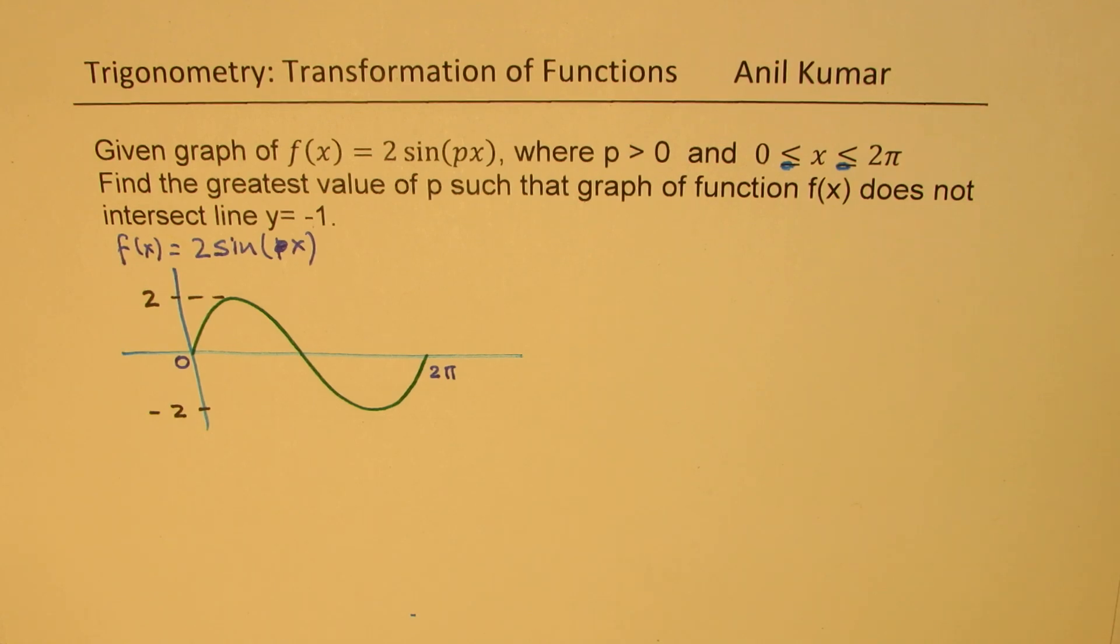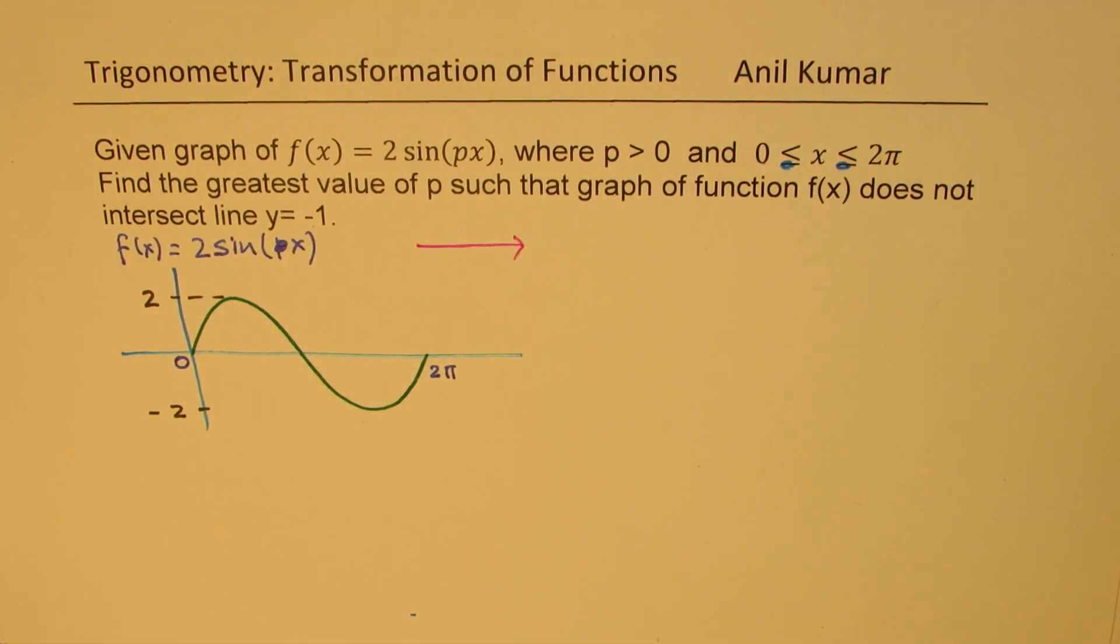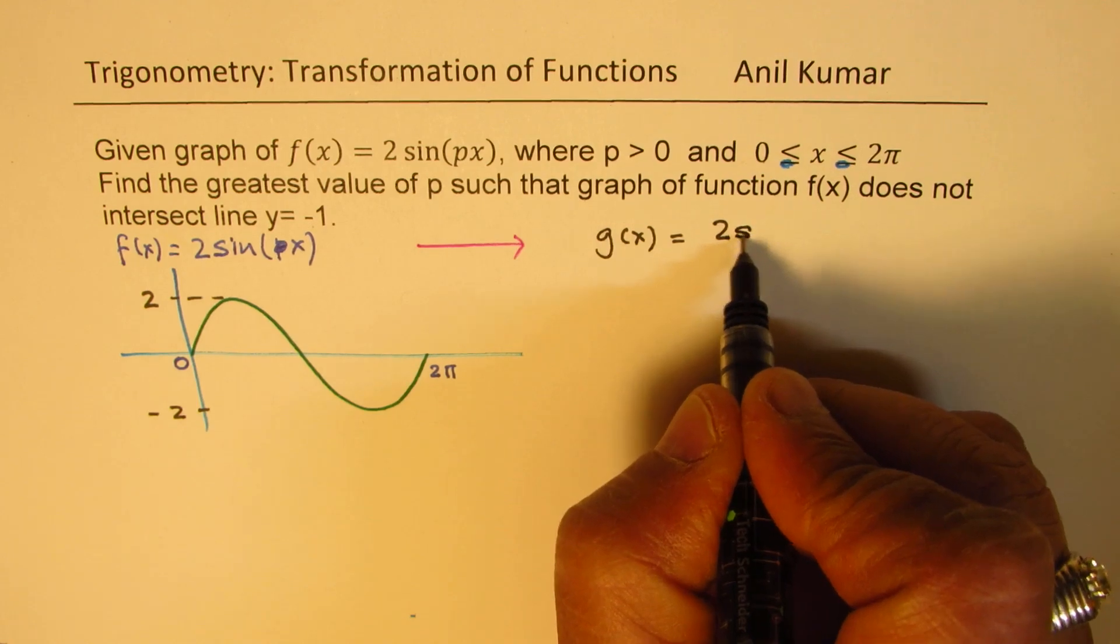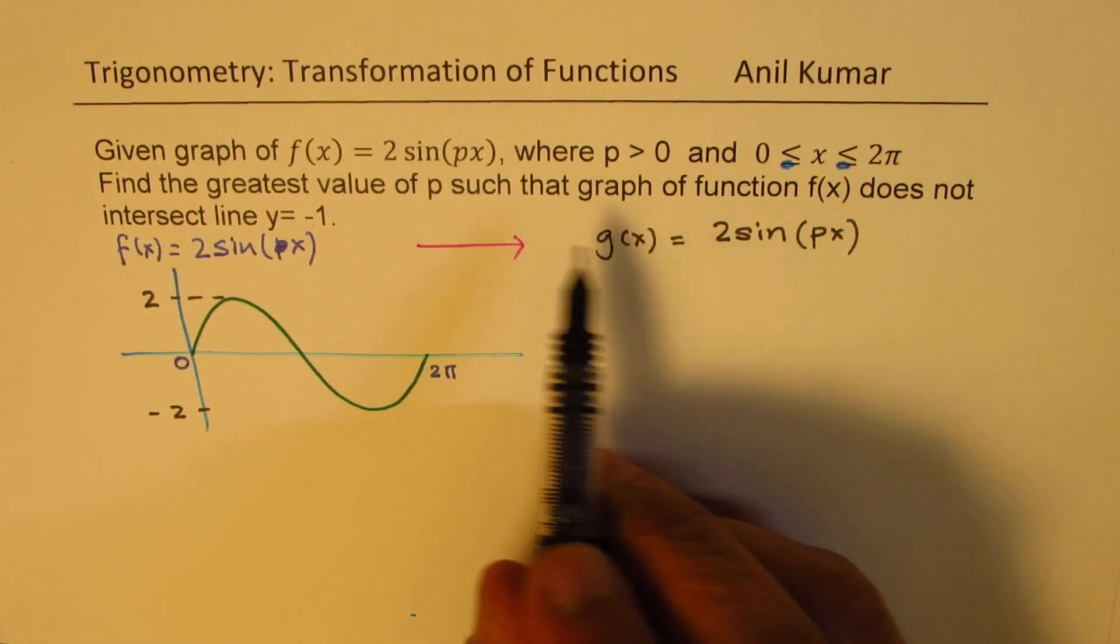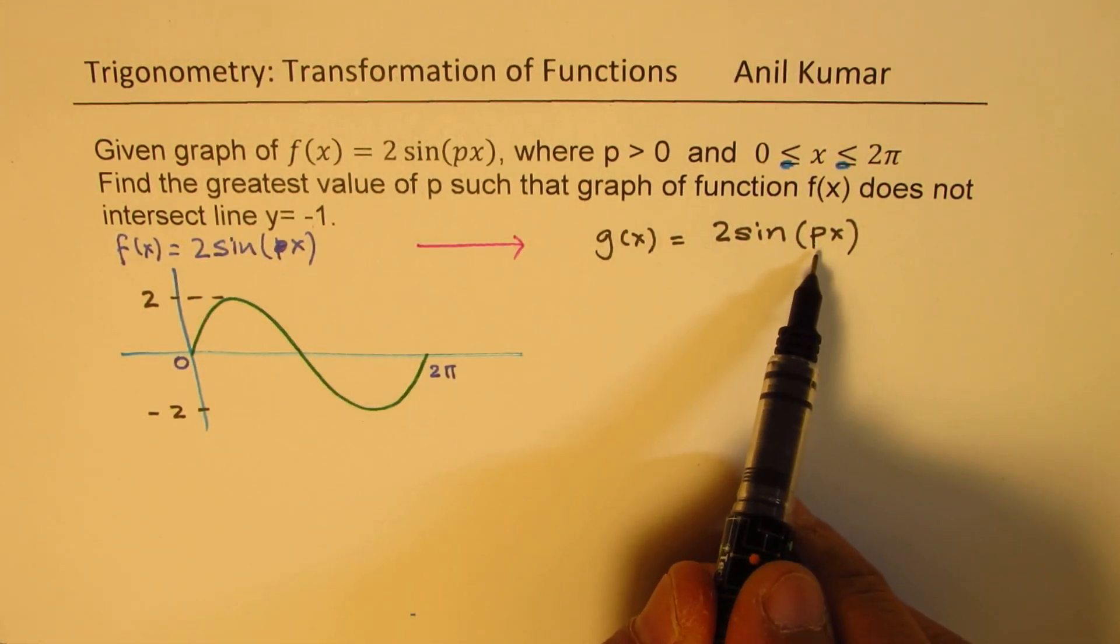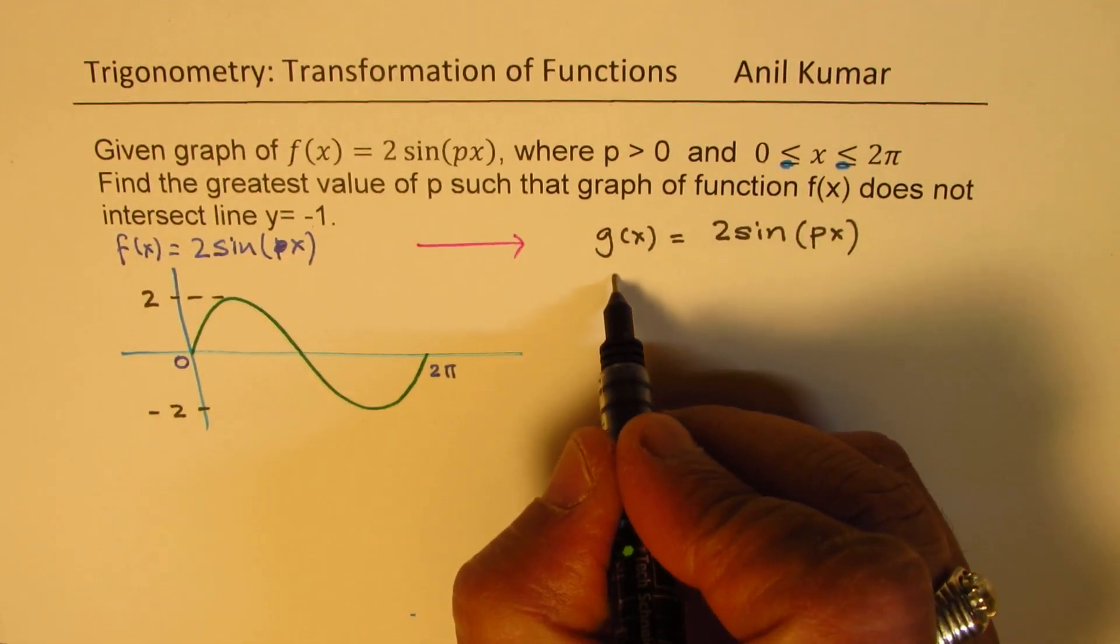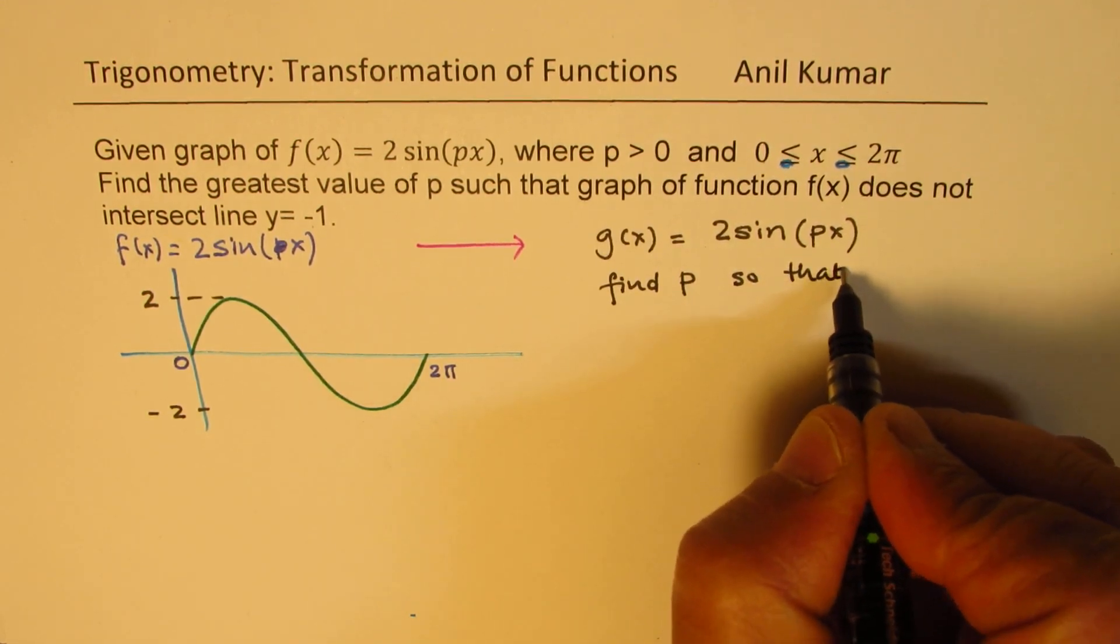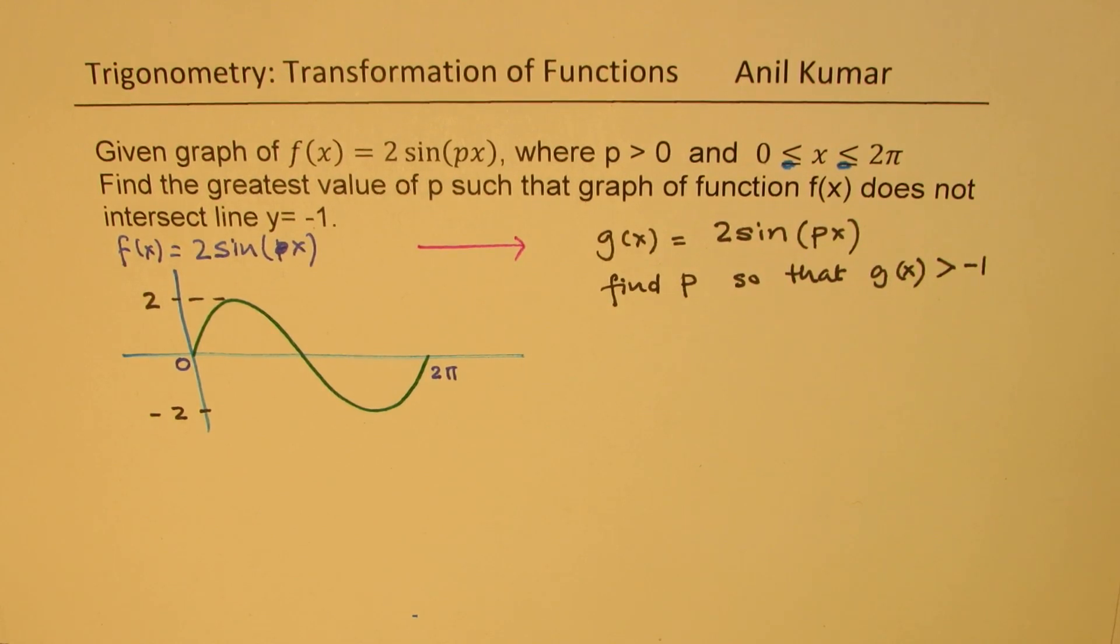The question is, we need to do the transformation so that we get the function, let us say g(x), which is 2 sin(px). And what we want here is that we need to find the greatest value of p such that the graph of this function does not intersect the line y equals to minus 1. So the question is to find p so that g(x) is greater than minus 1. That's the whole idea.